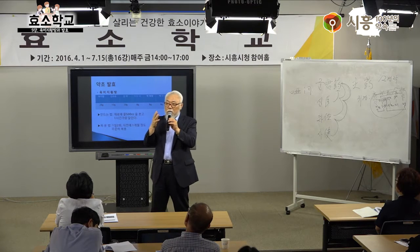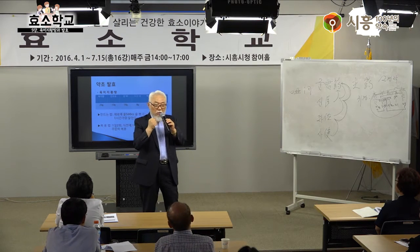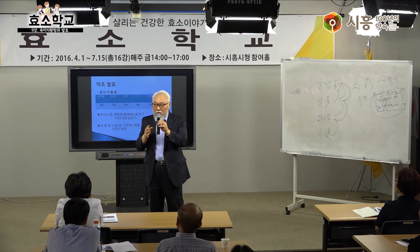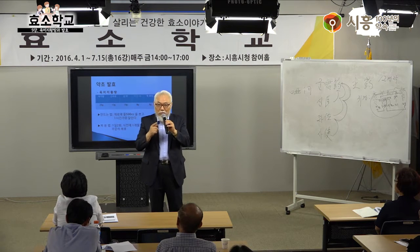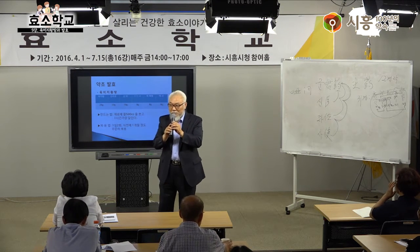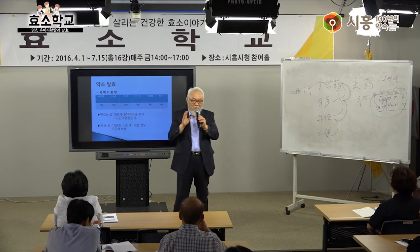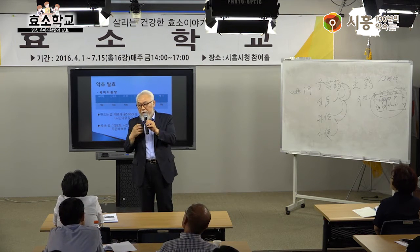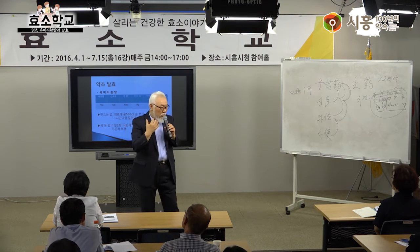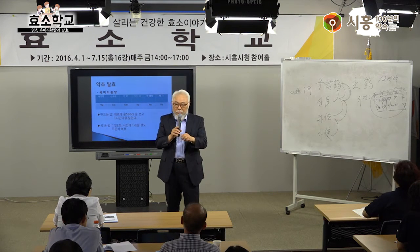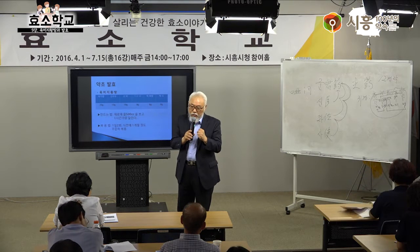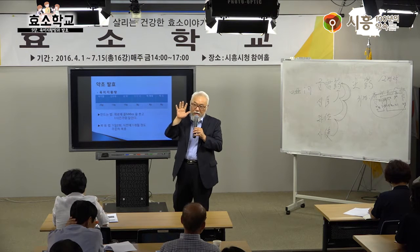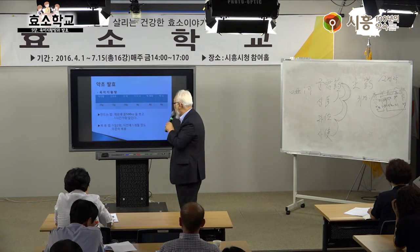600cc 넣는데 너무 많이 졸았으면 물 조금 더 넣고 졸이면 됩니다. 옛날에는 한약 데릴 때 물을 조금씩 넣으면서 삼투압을 좋게 했습니다. 지식이 아니라 지혜가 필요해요.